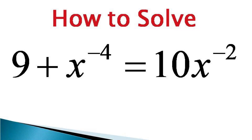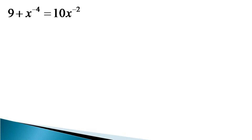Hello everyone. Here we are solving an exponential equation with negative indices. To solve this equation, the very first thing we do is bring all the terms to the left hand side and rearrange them to get an equivalent equation: x raised to the power minus 4, minus 10 into x raised to the power minus 2, plus 9 equals 0.